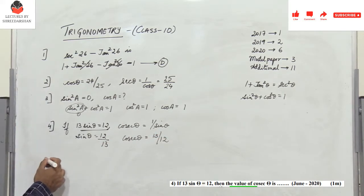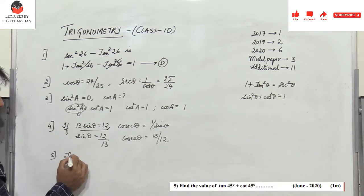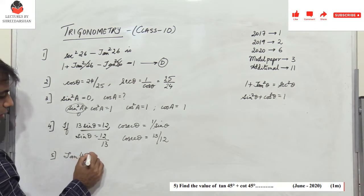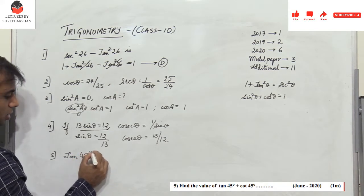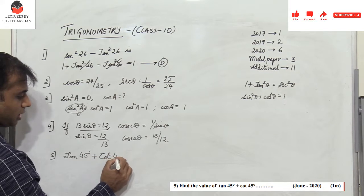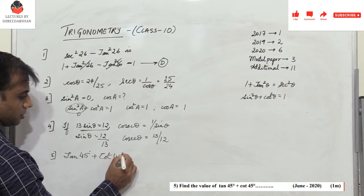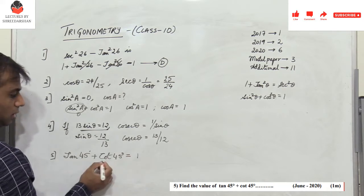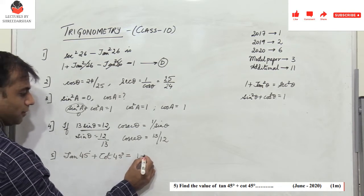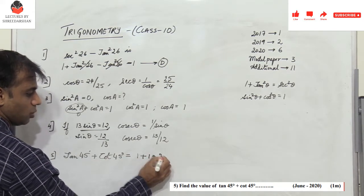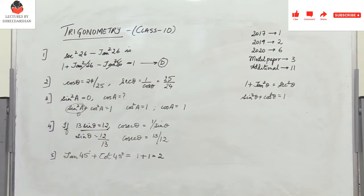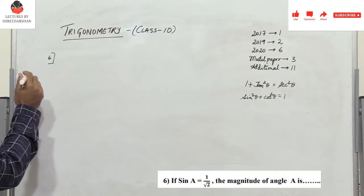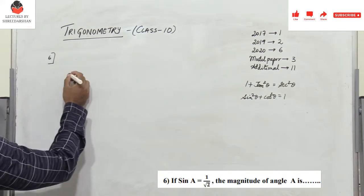Problem 5: what is tan45° + cot45°? We know tan45° = 1 and cot45° = 1, so 1 + 1 = 2.